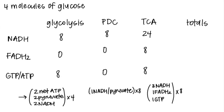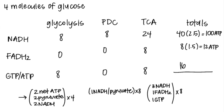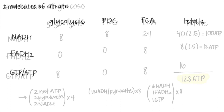Now we total them up. We get 40 NADH and multiply by 2.5. We get eight FADH2 and multiply by 1.5. Adding it all up, four molecules of glucose yields 128 ATP when fully oxidized.